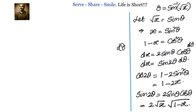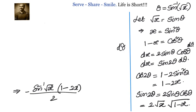Substituting those values, the indefinite integral becomes: −sin⁻¹(√x) · (1 − 2x)/2 + 2√(x(1−x))/4, which simplifies to −(1 − 2x)sin⁻¹(√x)/2 + √(x(1−x))/2 + C.